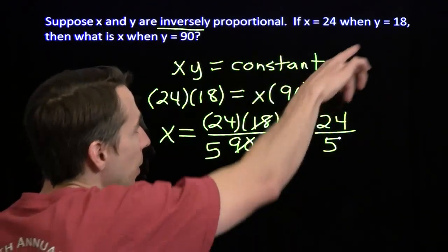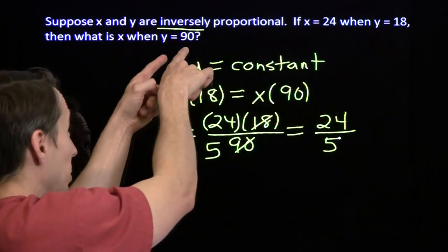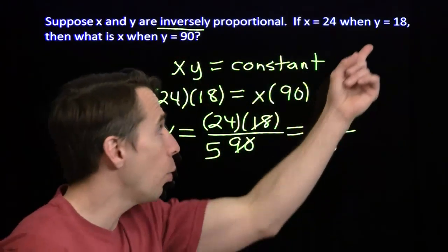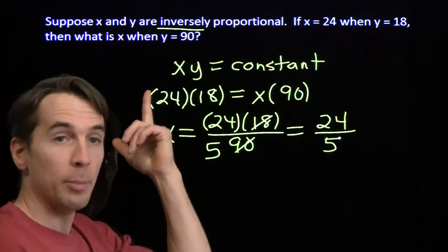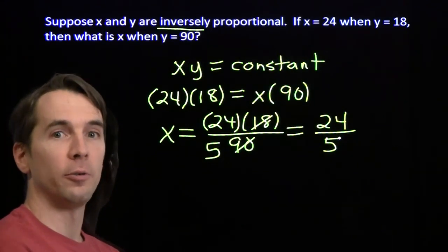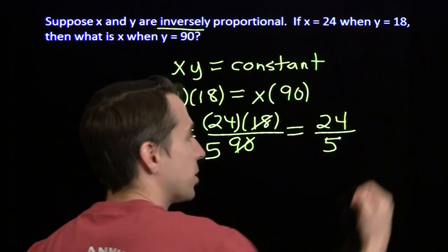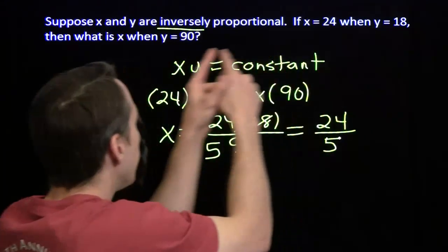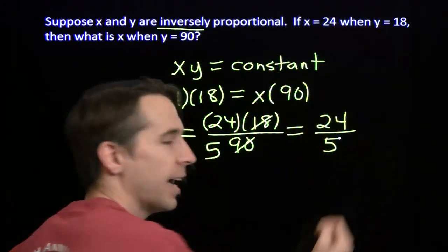Check this out. Y is 18, we make it go up to 90. We're multiplying y by 5. And look what happens to x. It goes from 24 down to 24 over 5. We're dividing x by 5. We multiplied y by 5, we divided x by 5.